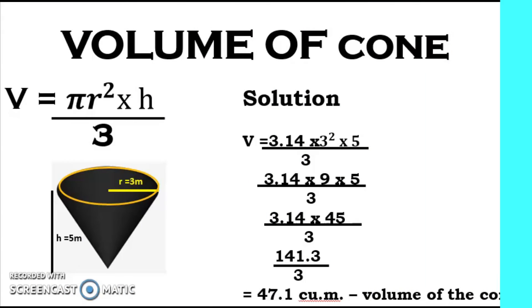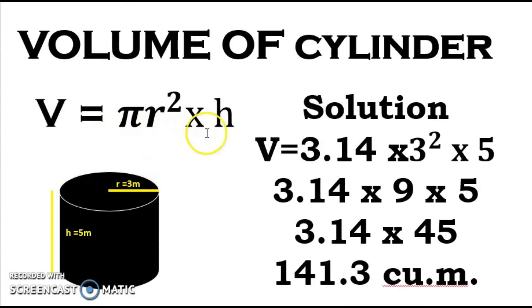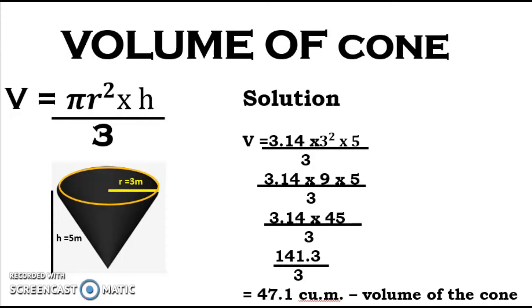The next example is the volume of a cone. The formula is V equals pi times r squared times height divided by 3. The pi r squared times height part is the same formula as the volume of a cylinder — for a cone we just divide by 3.